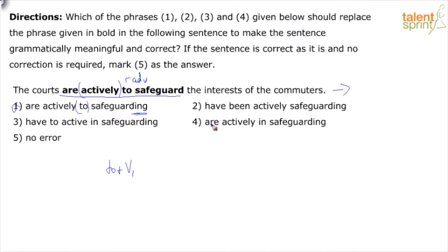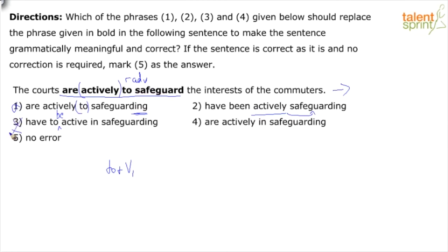Option 2 says: 'The courts have been actively safeguarding.' Here the adverb is completing the meaning of how the courts are safeguarding the interests of the commuters — this seems like our answer. Option 3: 'The courts have to be active in safeguarding' — 'be' is missing from the structure, so I can't use option 3.